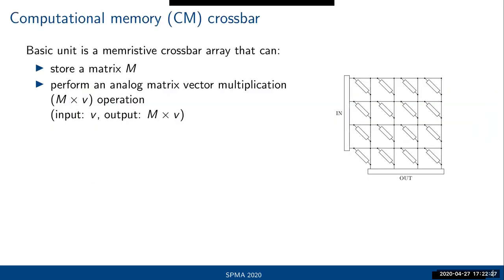Specifically, the hardware unit we are considering is a computational memory crossbar. This memristive array can store a matrix and at the same time perform an analog matrix-vector multiplication if we feed it the proper input — a vector — and the output will be the multiplication of the stored matrix with that vector.